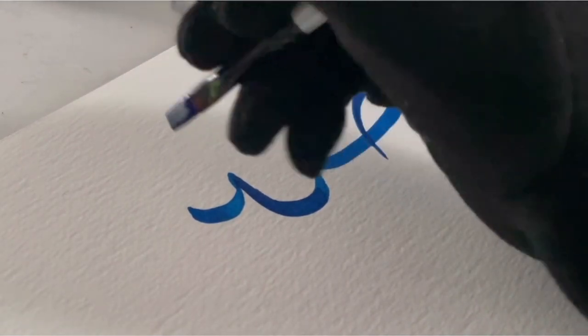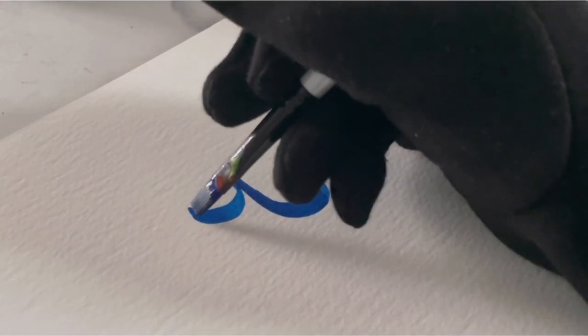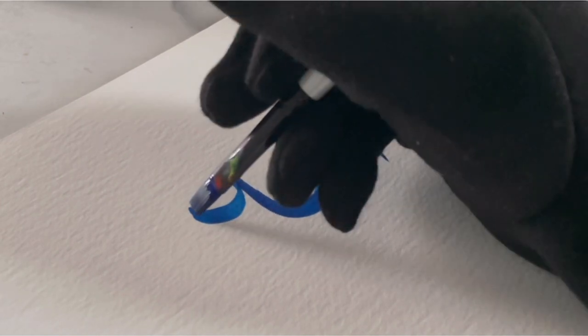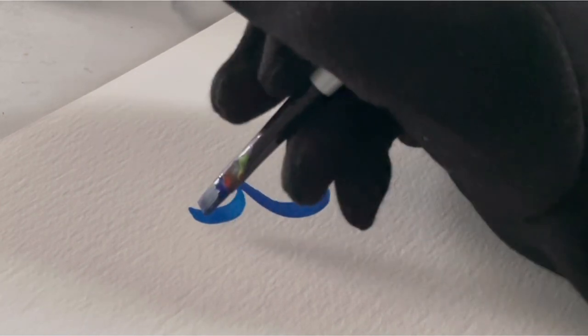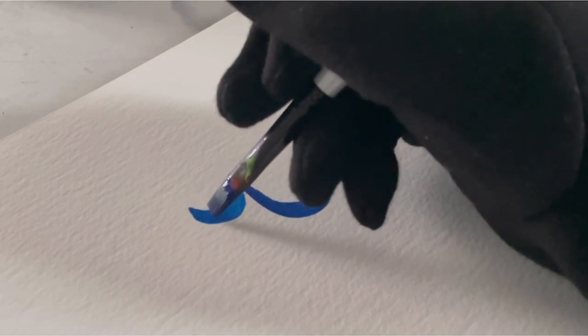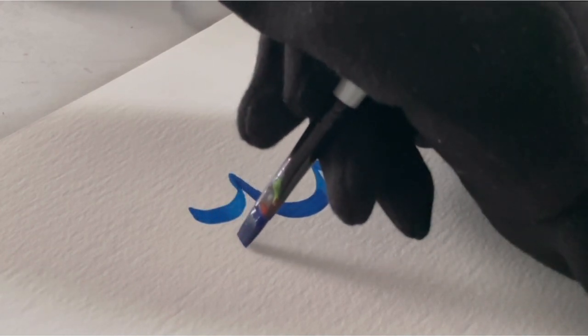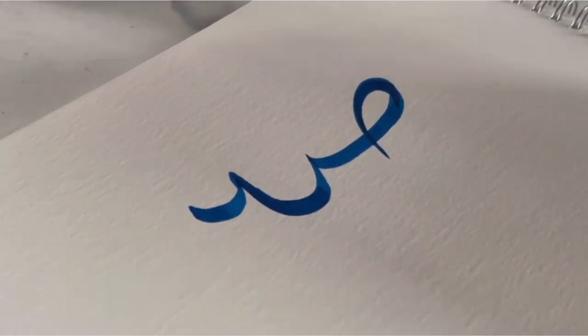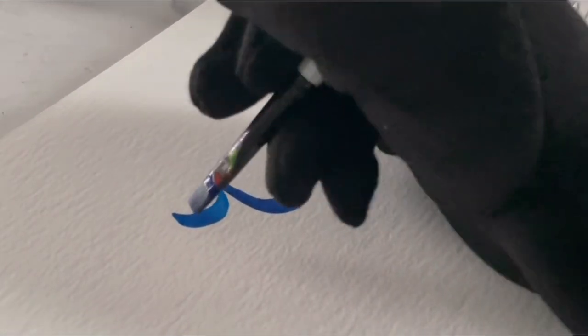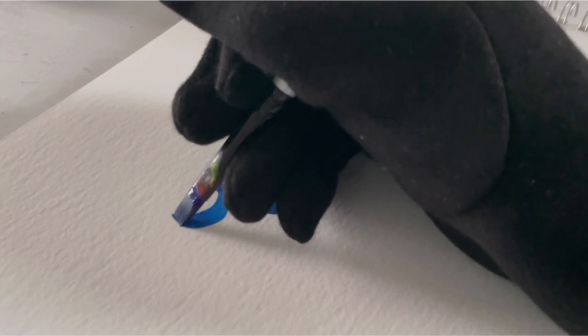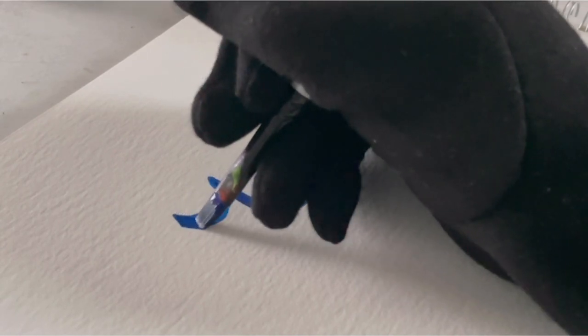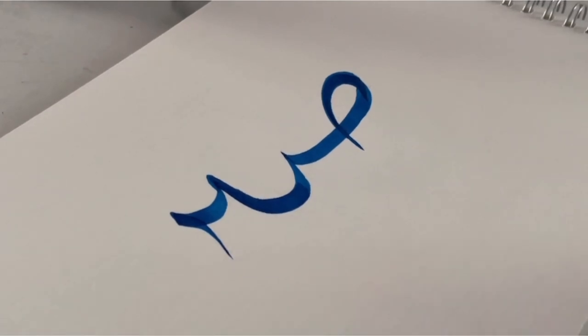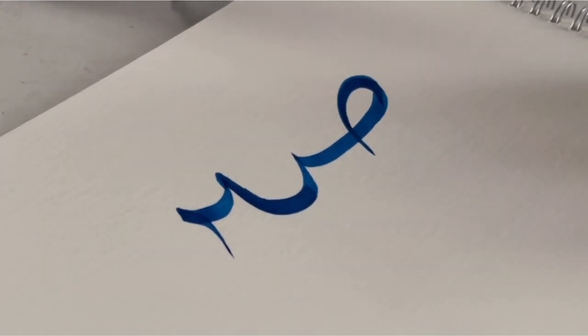I'll now be writing the top slash middle section of the letter Ra, and what I'll be doing is starting from where we left off with the heavy hand and drawing a slight curve and finishing off with a light hand about there. So again, I'm using a heavy hand here and I finished off with a light hand, and that's how I got that really thin sharp line.